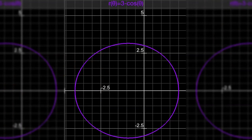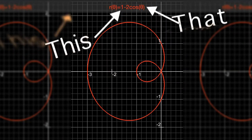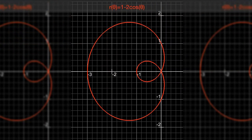1 minus 2 cosine theta - that's a limaçon. Why? Because the coefficient is bigger than the constant, and it's going to double on itself because it's going to have a negative r.